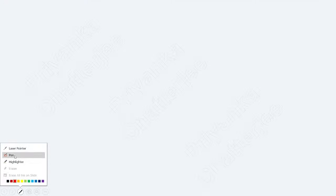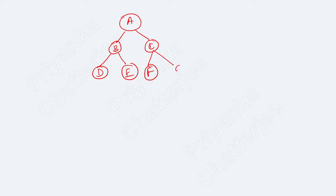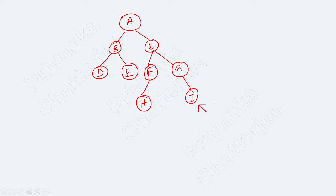I am taking a simple example. I have a tree with nodes A, B, C, D, E, F, G, H, and I. This is a graph. My goal node is I — I want to search for I. From the starting node I have to begin searching.